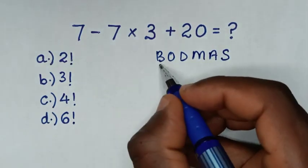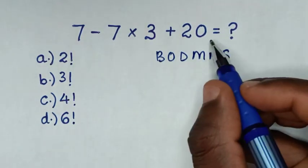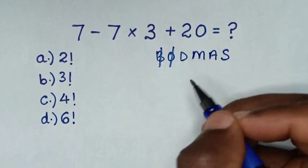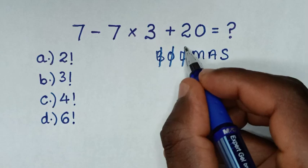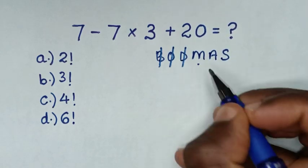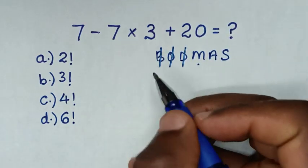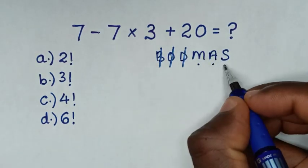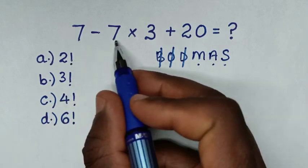Whereas B is bracket, in this problem we don't have bracket, also we don't have order or exponents and also we don't have division, but we have multiplication which is 7 times 3, and we have addition 3 plus 20, and we have subtraction 7 minus 7.